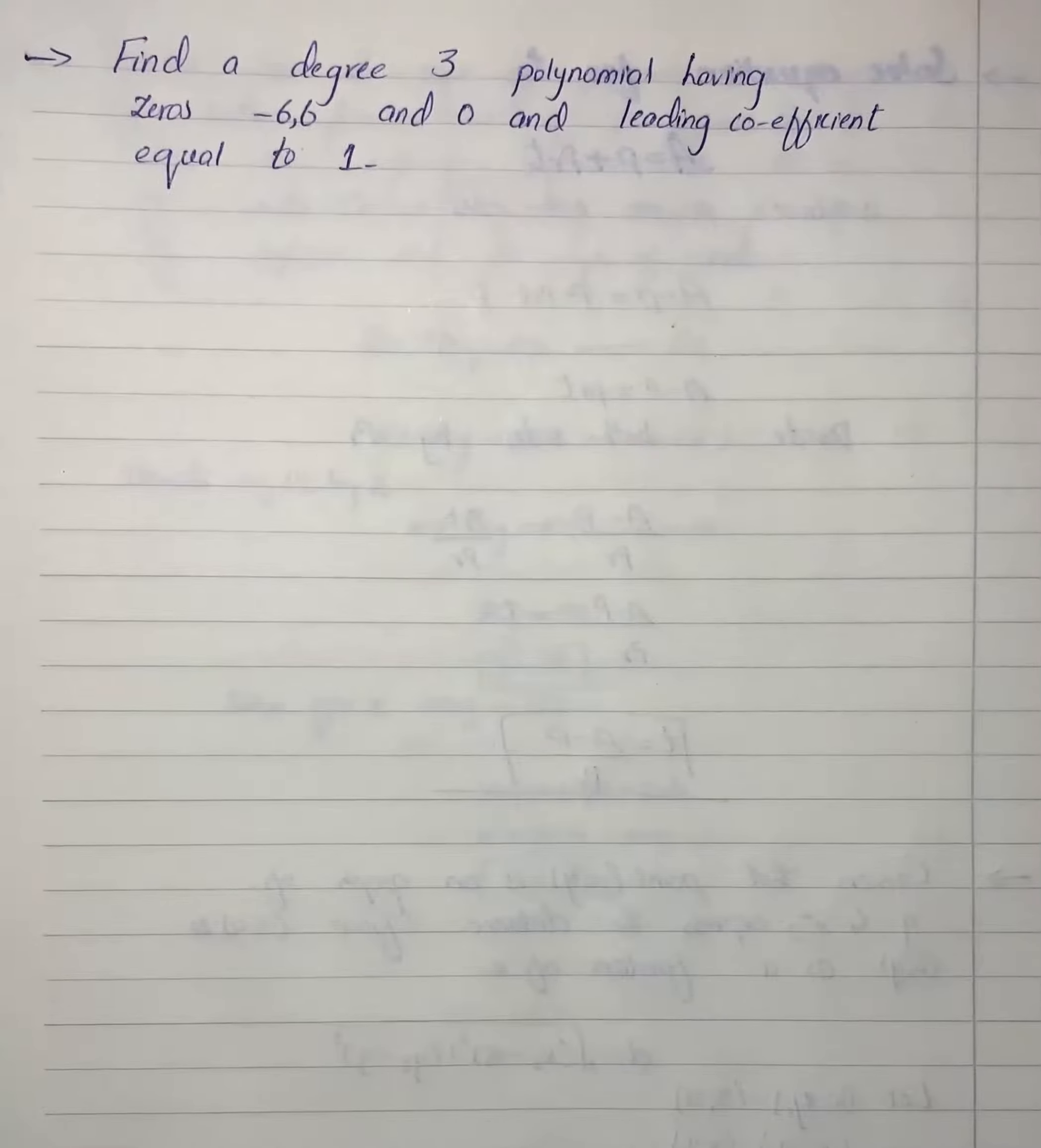Here we have a question. We have to find a degree 3 polynomial having zeros -6, 6, and 0, and leading coefficient equal to 1.